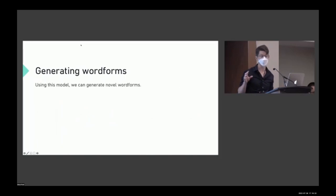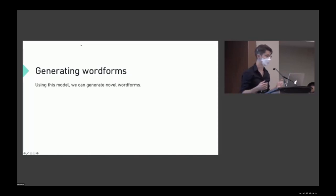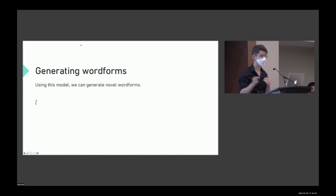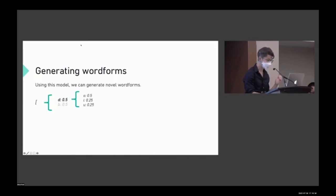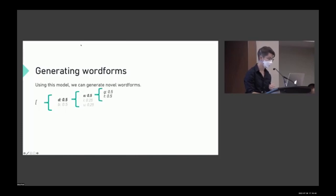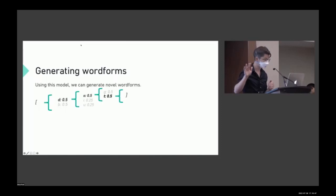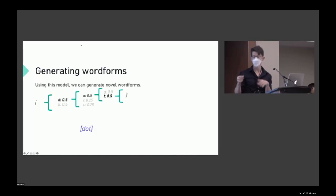Once you have this trained model — which has learned the sequential dependencies in a language's word forms — you can generate novel word forms. You feed it a start token and sample from the possible sounds that could occur after it. For example, sample a D, then sample from sounds after D and get O, then T, and eventually an end token, giving a completed word form. This is a procedure for generating word forms that sound like those in a real language.